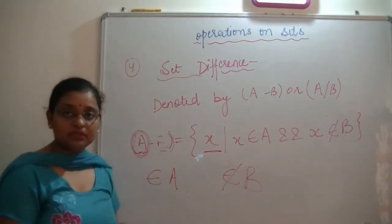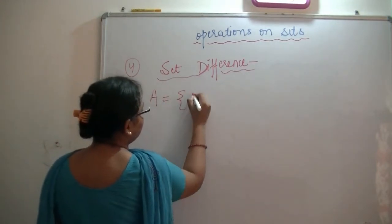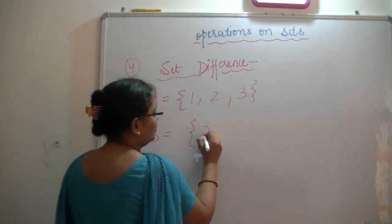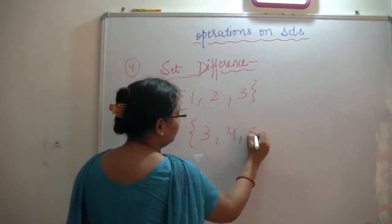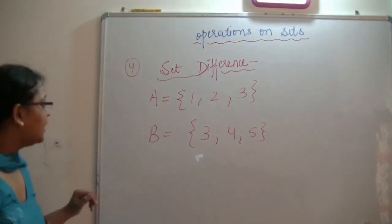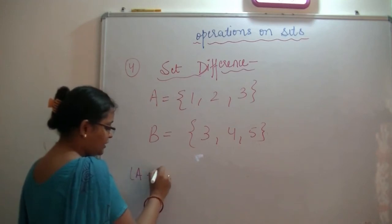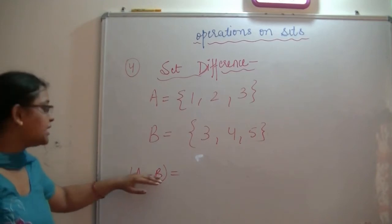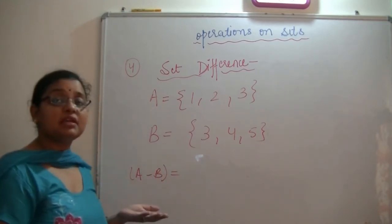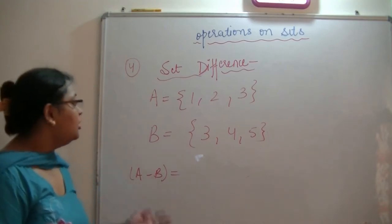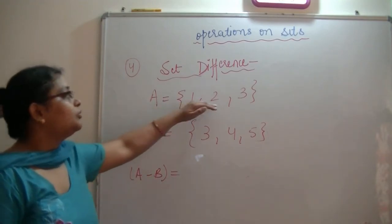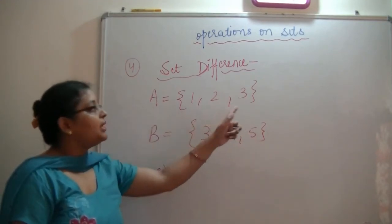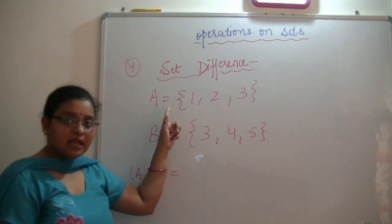Let me show you an example. Here we have one set: A = {1, 2, 3} and another set: B = {3, 4, 5}. Now let's see what we find for A-B — we remove all the elements from A that also appear in B.